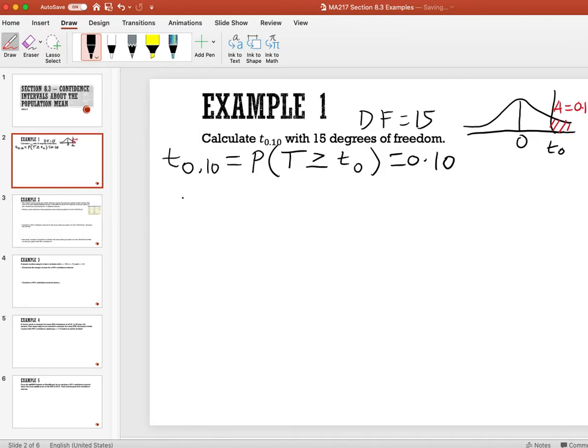In order to do this in Excel, to find that value of t sub 0, we are going to use the function T.INV of this area. The area to the right is supposed to be 0.10, so the area to the left is going to be 0.90.